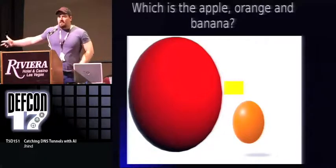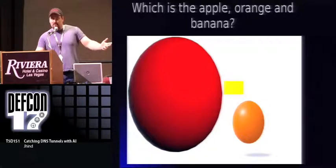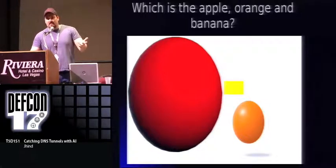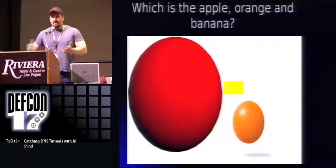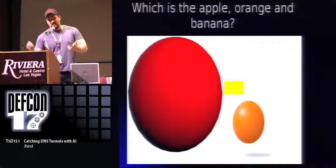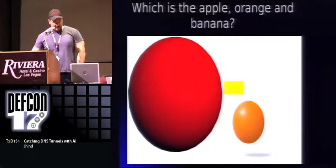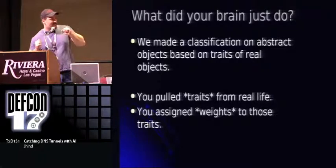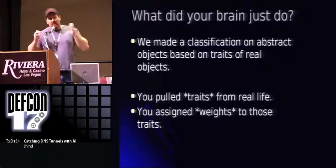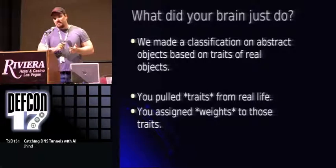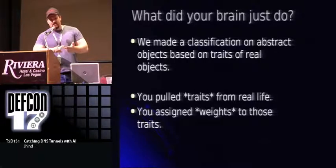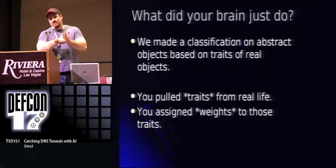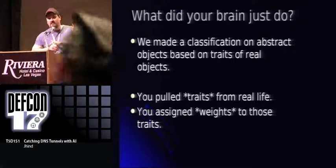To get our minds around how this AI works, we're going to talk about how your brain works. If you see a picture and I said which is the apple, which is the orange, and which is the banana — most normal people would look at the red globe and assign apple to that, look at the orange globe and assign orange, look at the yellow and assign banana. Your brain thought about the real object, like an apple: it's red, it's delicious, it's sweet, it's crunchy, it's round. Three of those don't matter for that classification decision — you don't care what it tastes like — so you discarded those and took two traits: color and shape.